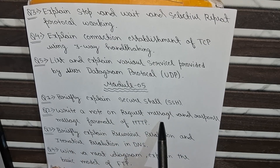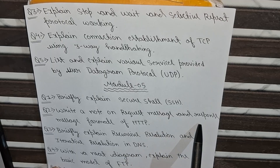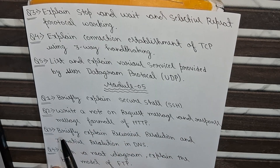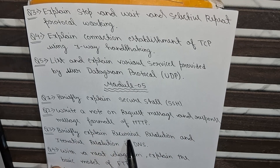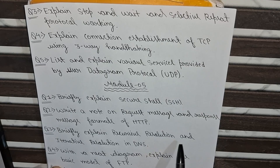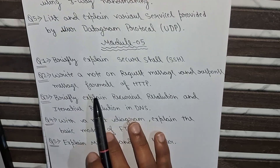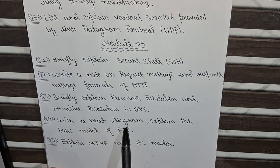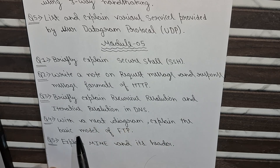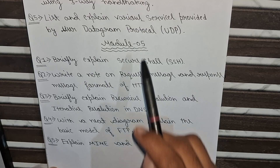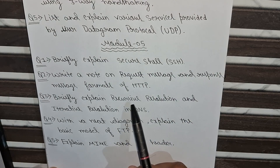The third question is: Briefly explain recursive resolution and iterative resolution in DNS. The fourth question is: With a neat diagram, explain the basic model of FTP. The fifth and last question is: Explain MIME and its headers. These are the 5 questions from Module 5.